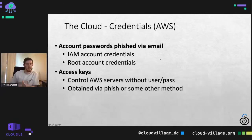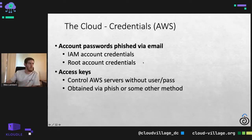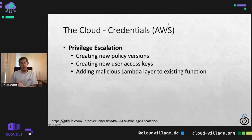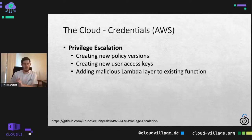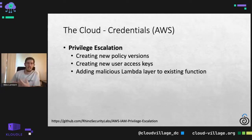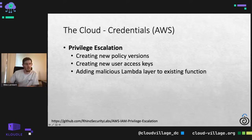If we have the access keys or root access keys, similarly creating new policy versions is one way those credentials could be used for privilege escalation. You can create user access keys for yourself or your friends. You could even add a malicious Lambda layer to an existing function, and if that's not well audited, it'd look pretty normal with pre-existing Lambdas. If you're not tracking and auditing activity, those things could be pretty sneaky and get past the door.